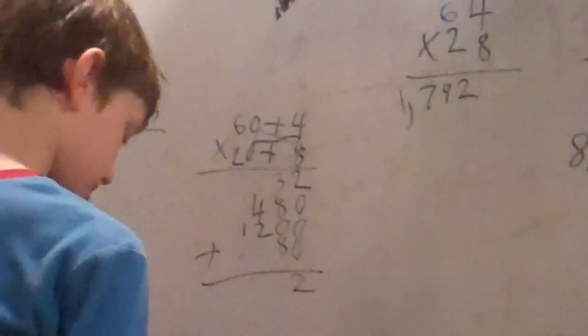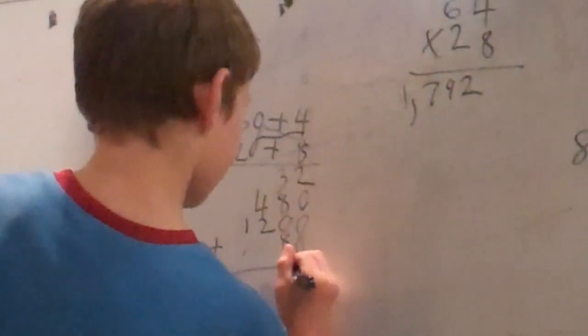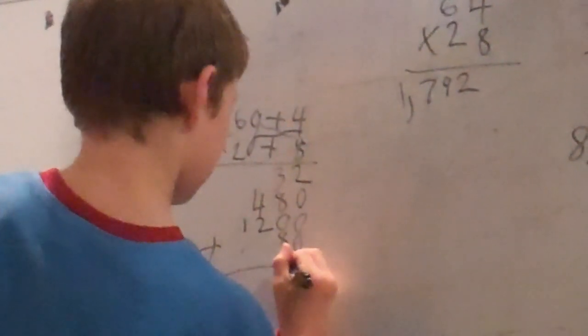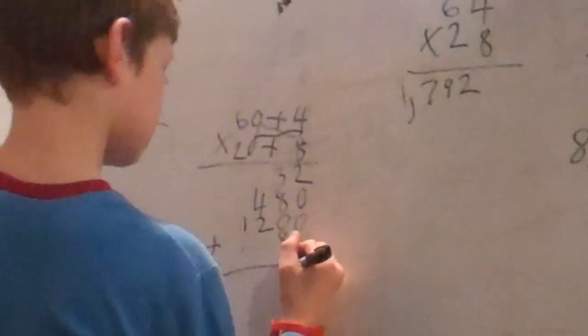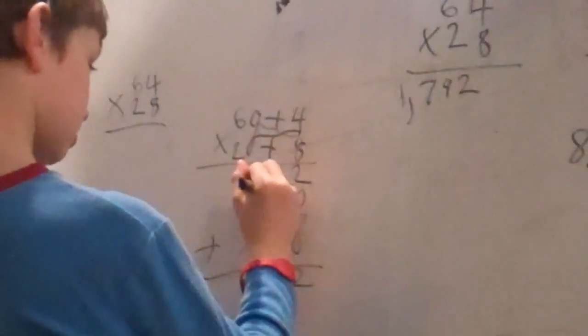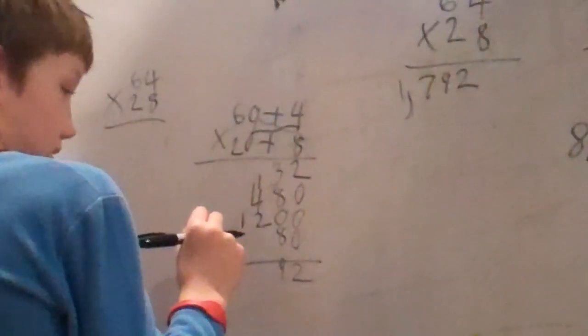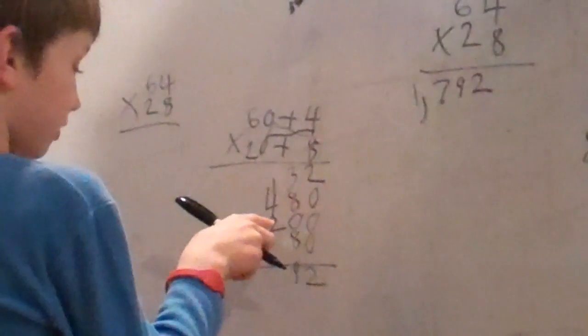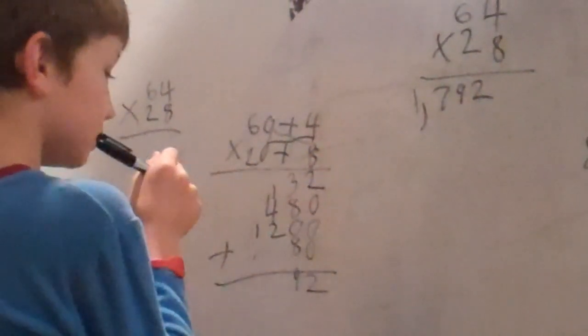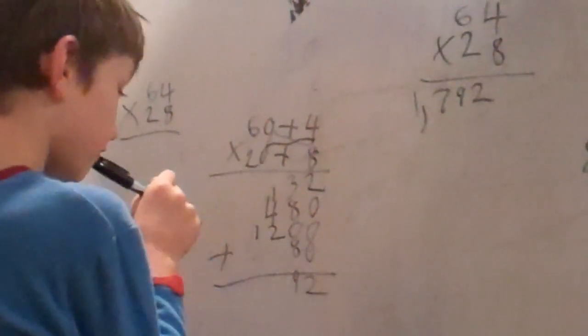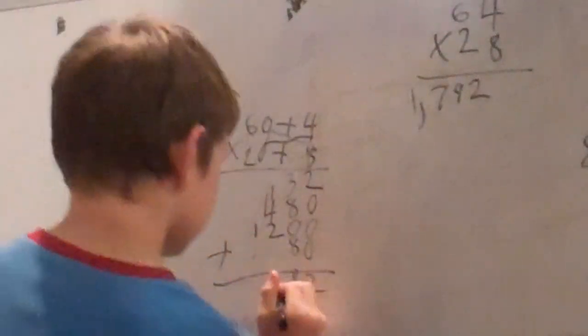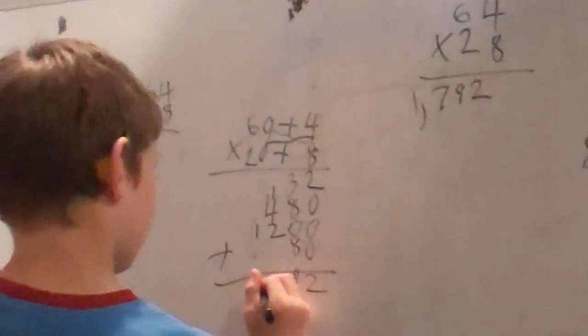Eleven plus eight. One, two, three, four, five, six, seven, eight, nine, nineteen. Nine. And add this up here. One plus four is five. Five plus two is seven. And bring the one straight down.